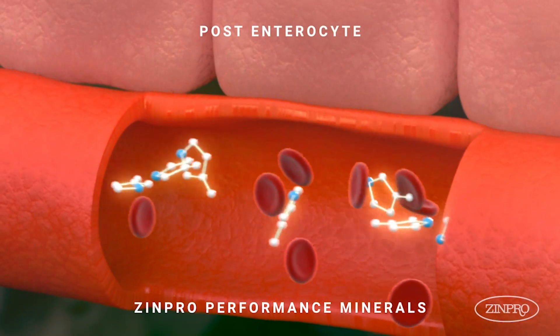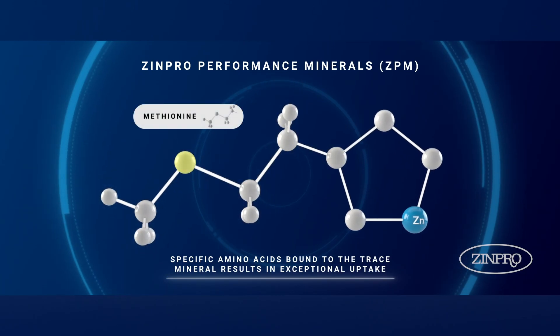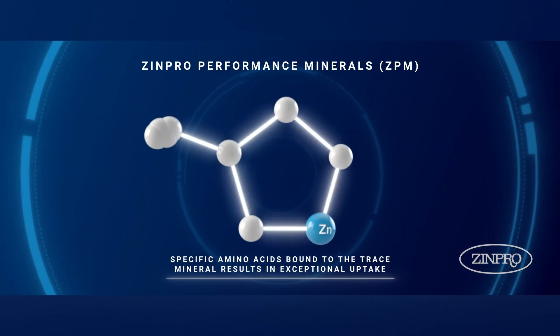And then once we are absorbed, we are actually in circulation in a different form as well. Zinpro performance minerals utilize the amino acid transporters to deliver the metal, and there is a whole family of amino acid transporters. There are cationic, anionic, hydrophobic, and hydrophilic transporters. Amino acids are all the same except for their side chain, and it is the recognition of this side chain that allows bonding to these transporters. The mineral doesn't affect that bonding.